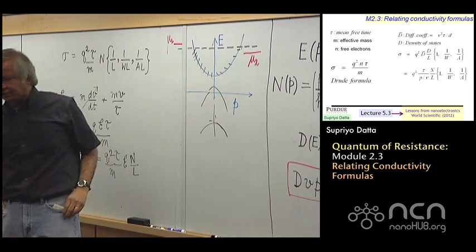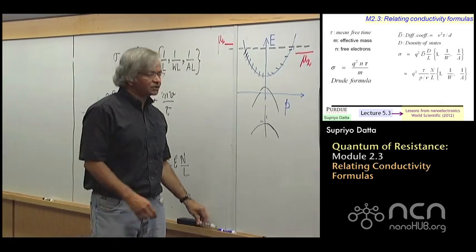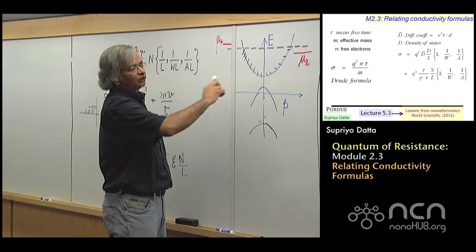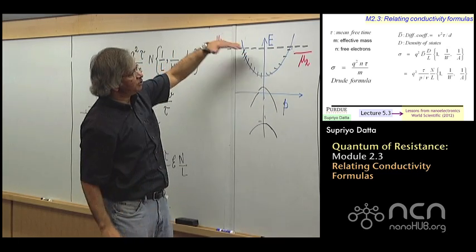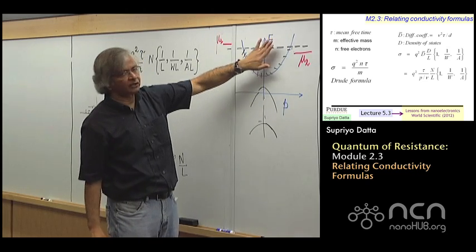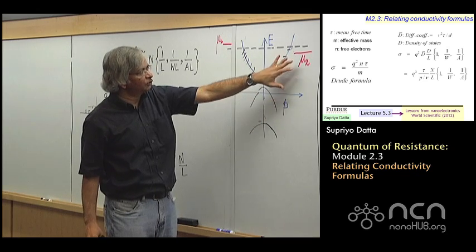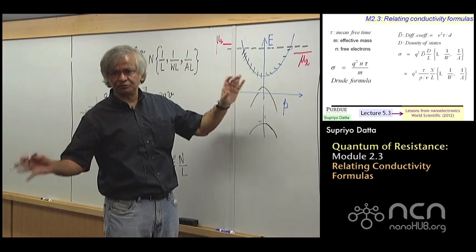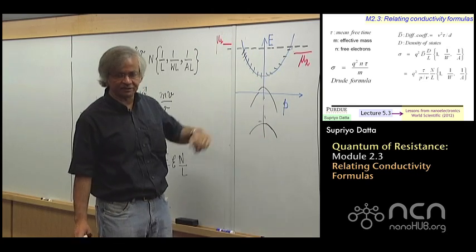On the other hand, the viewpoint that we adopted here, that gives a very natural explanation for this. And that is what we did in week one. Namely, only those electrons conduct which are in this energy range between mu one and mu two. Why? Because those are the states that one contact wants to fill up, another contact wants to empty. Down here, both contacts want to keep them filled, which is why they stay filled, nothing happens. You see? So it follows very logically. There's really no problems there.